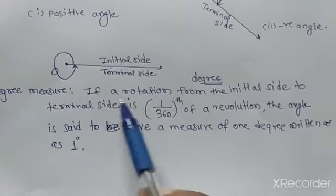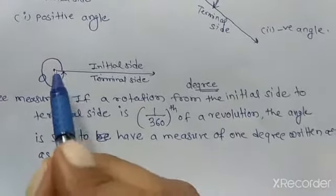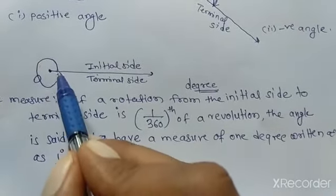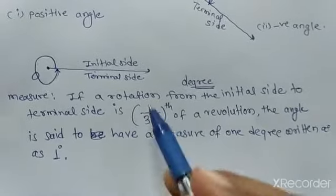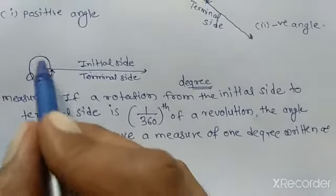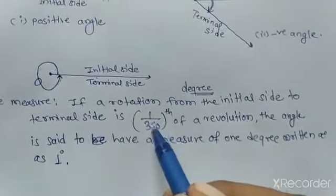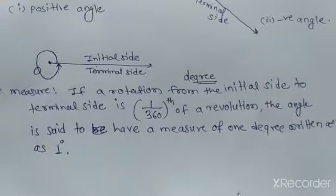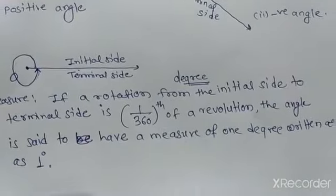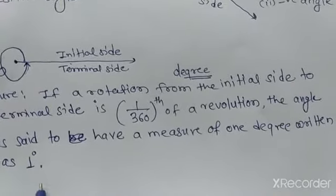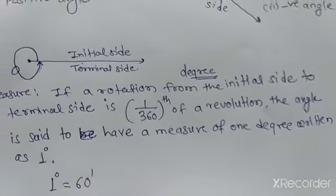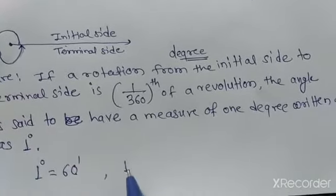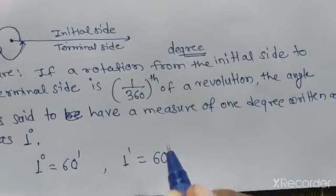From the definition of degree measure, you can see that the rotation from the initial side to the terminal side when we get 1/360th of a revolution gives 1 degree — because a total angle is 360 degrees. A degree is divided into minutes: 1 degree equals 60 minutes, and 1 minute equals 60 seconds.